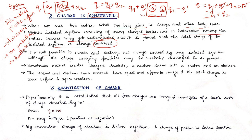It is not possible to create or destroy net charge carried by any isolated system, although charge-carrying particles may be created or destroyed. One example of this is that nature can create charged particles: a neutron turns into a proton and an electron. The proton and electron thus created have equal and opposite charges, and the total charge is zero both before and after the creation.